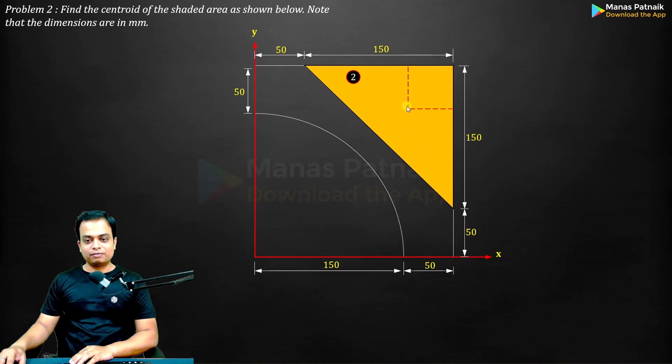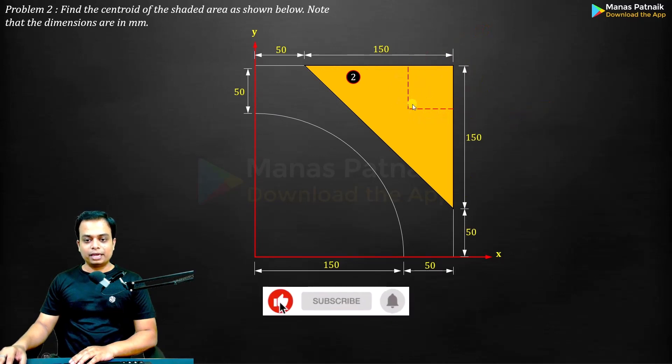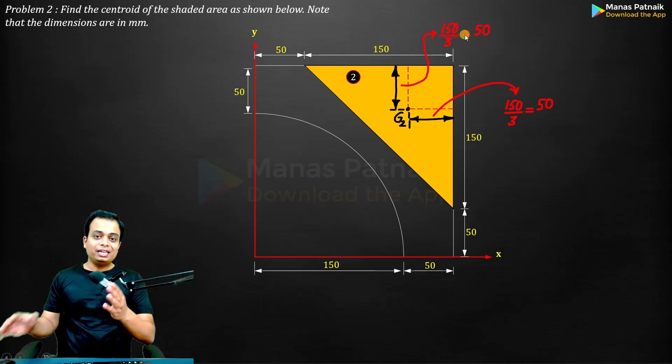So right triangle, where are we? Here we are. Base is 150, so 150/3. This distance is 150/3, which is 50. Here it is. And this is h, h/3. That means this distance over here, b/3, this is 150, so this is b/3: 150/3 that I have written over here. And this is h, so this is going to be h/3 that I have written over here.